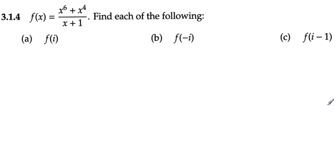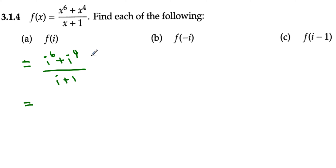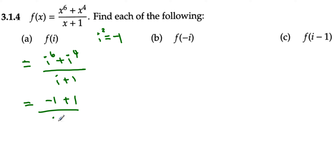Number 4. We have i² being placed in the expression. The first substitution gives i⁶ plus i⁴ over i plus 1. Since i² equals negative 1, raising to the third power gives negative 1, so i⁶ equals negative 1. And i⁴ is the square of i², which gives plus 1. Since the numerator becomes 0, our answer is equal to 0.